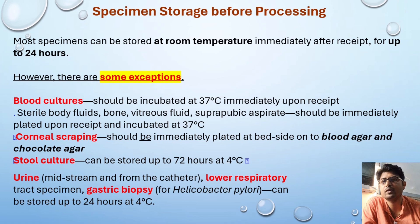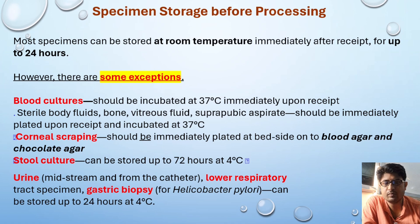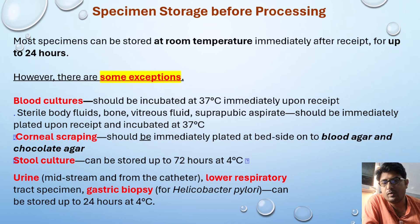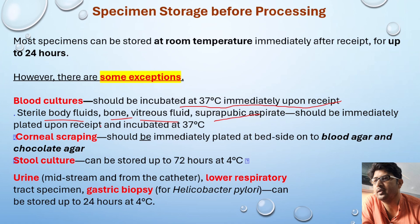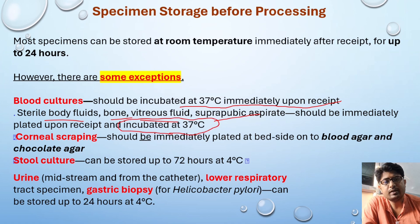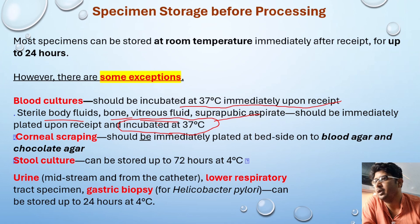Regarding specimen storage before processing: most samples can be kept at room temperature for a few hours while working. However, blood cultures must be incubated at 37 degrees centigrade immediately upon receipt. Sterile body fluids — CSF, bone, vitreous fluid, suprapubic aspirates — should be immediately plated upon receipt and incubated at 37 degrees centigrade, as the integrity of these samples cannot be preserved if this step is delayed.